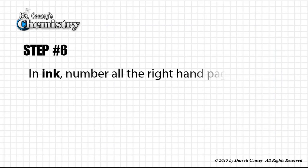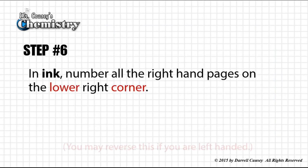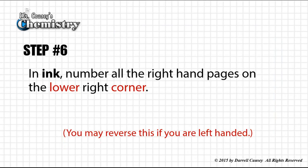Step number six, in ink, number all the right hand pages on the lower right corner. You may reverse this if you are left-handed, of course. Example, notice that we're going to write a one in the right-hand corner, and continue to do that for as many pages as you have.